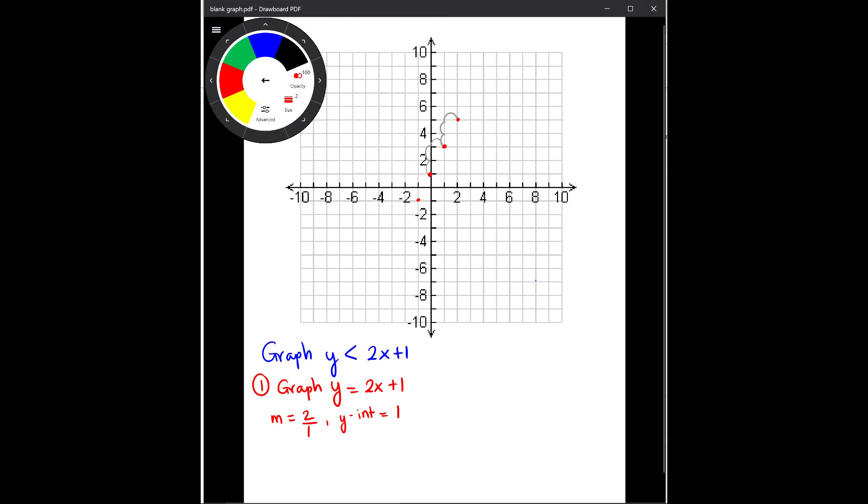So this is a line but I don't connect all the points yet because I have to determine which type of line I will have. So step number two. If I have less than or greater than, then I will have dashed line. If I have less than or equal to, or greater than or equal to, I will have regular line or I call solid line.